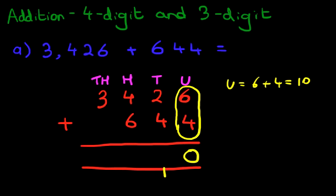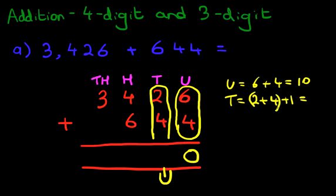Now let's look at the tens column. We have to add 2 and the 4, and don't forget the 1 over here. We've got 2 plus 4 plus 1, but 2 plus 4 is 6, and add the 1 is 7.